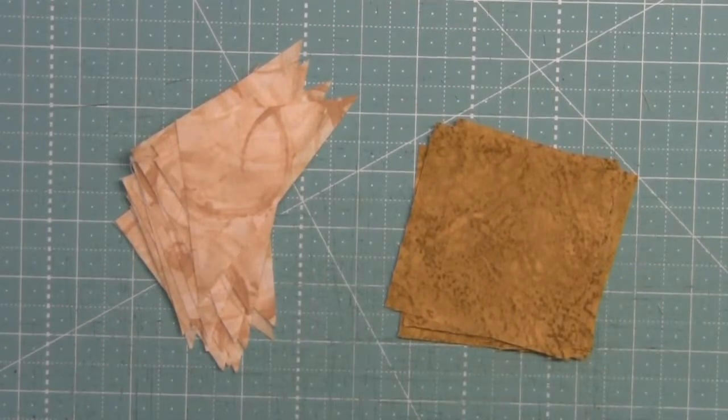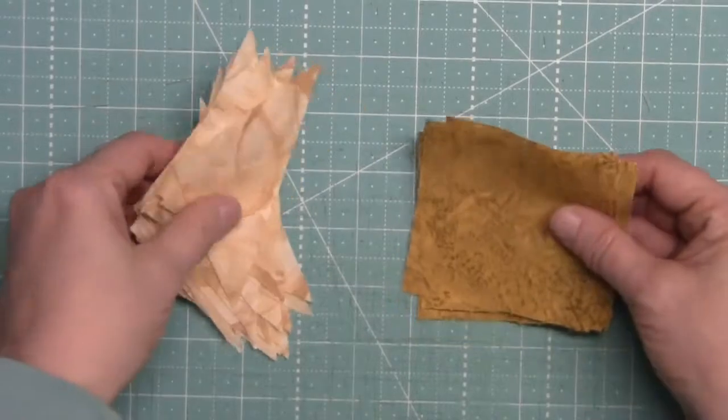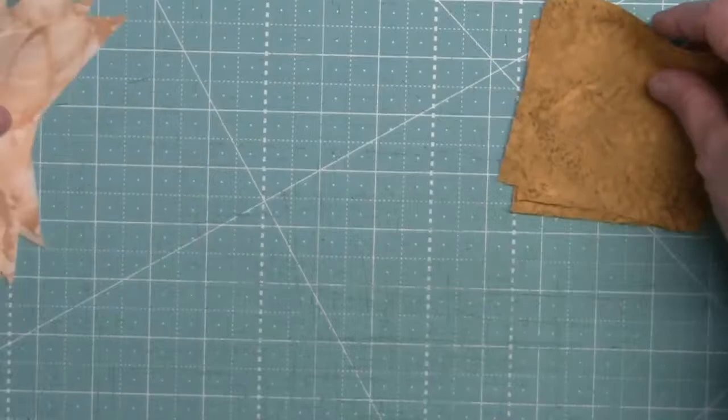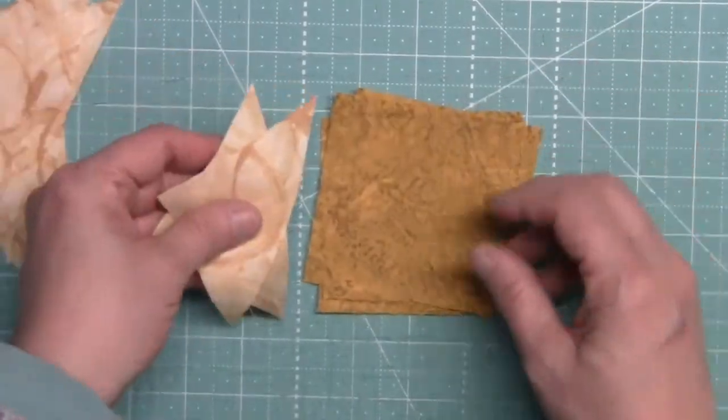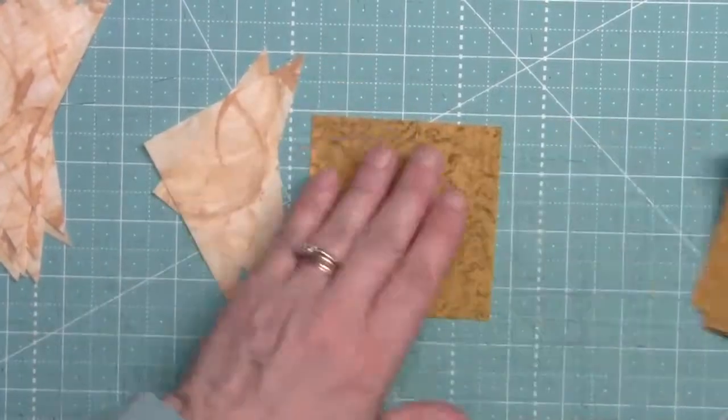We're going to make nine square in a square units this month, and we're going to start with our fabric E squares and our fabric A triangles, and we're going to do as we've done for other square in a squares. We have five squares, so we're going to do this five times.